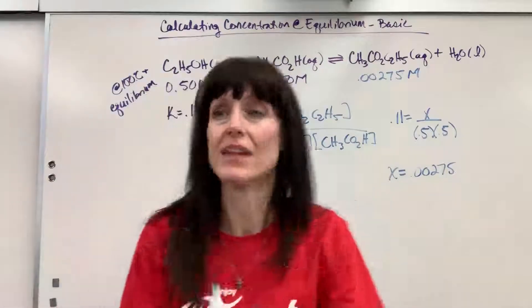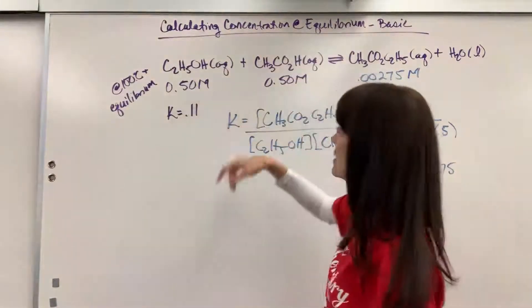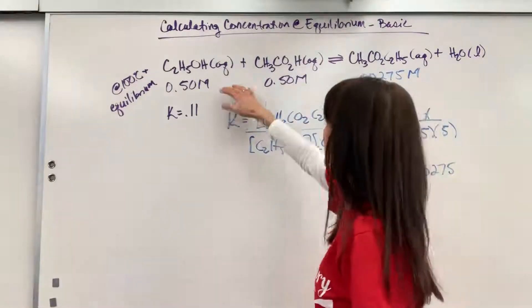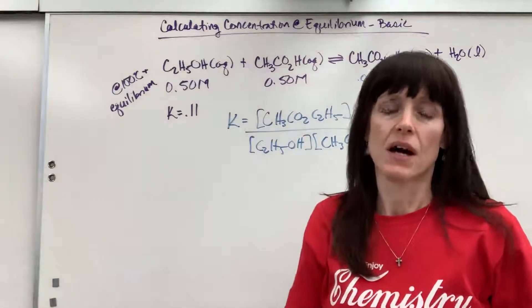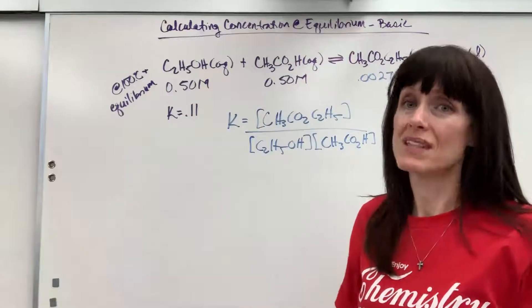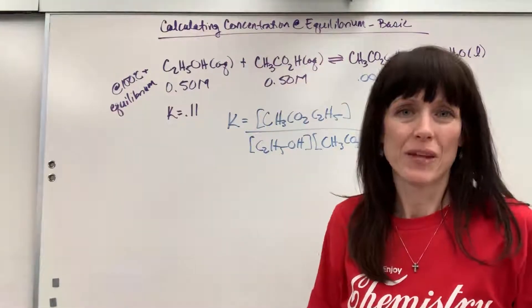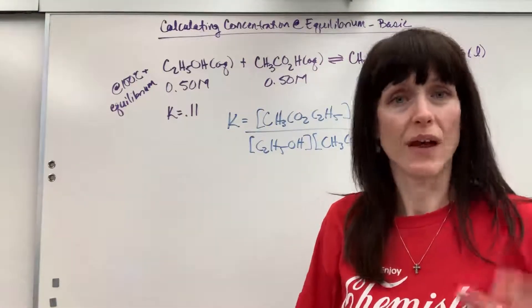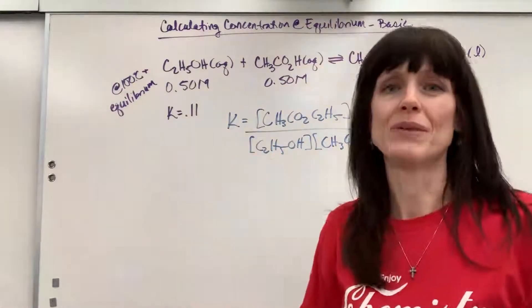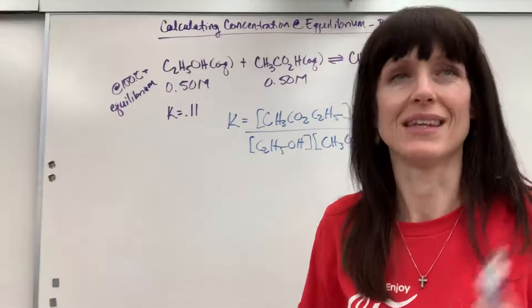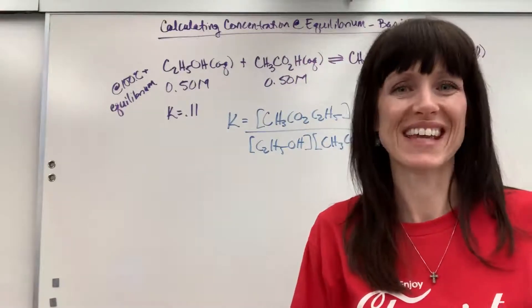The key is that we were given information at equilibrium. I was given the concentration and the equilibrium constant at equilibrium, which is why I could just plug into the equation. If we weren't given values at equilibrium, we'd have to do an ICE table. If you have a problem where you can't just plug in, look at my ICE table videos in the equilibrium playlist. Have a good day.